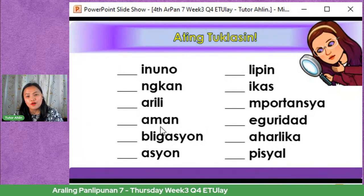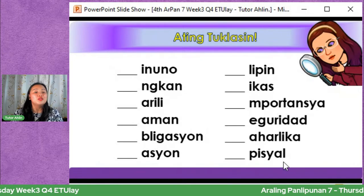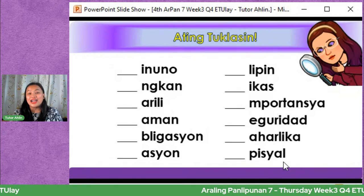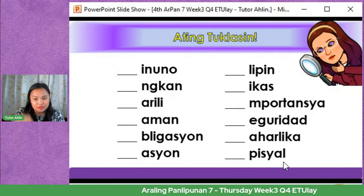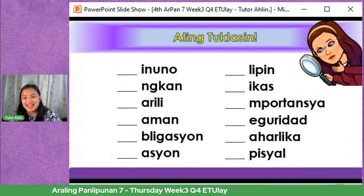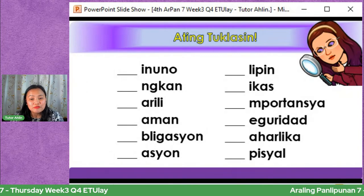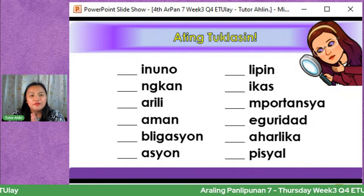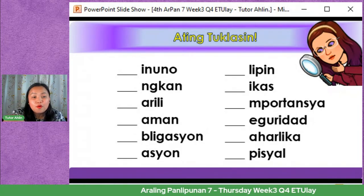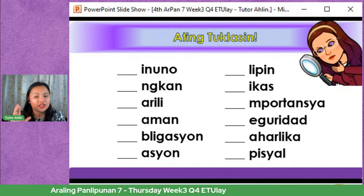Ibigay ninyo lang ang unang letra. 12 letters yan — 1, 2, 3, 4, 5, 6, 7, 8, 9, 10, 11, 12. Magkakasunod yan. Ang isusulat ninyo ay yung buong salita na nabuo ninyo mula sa 12 letters. Meron na nakapagsagot — Lisa Gabriel, Jessica, JD De Vera, Jenny De La Cruz, Nell Lea.